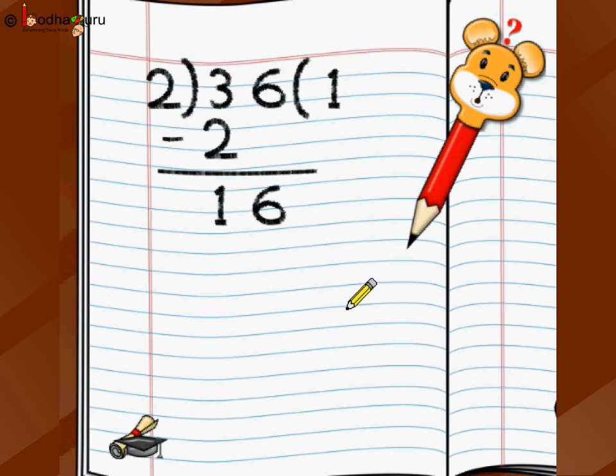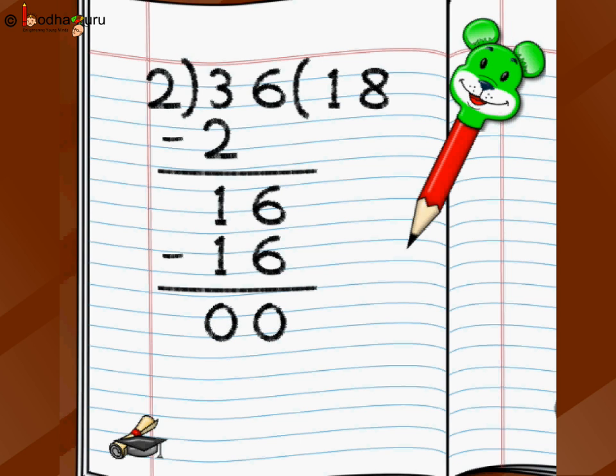Now, you write the next digit which is 6 here. So, you wrote 6 here. Now, you again do the multiplication table of 2. Where does 16 come in? 2 ones are 2, 2 twos are 4, 2 threes are 6, 2 fours are 8, 2 fives are 10, 2 sixes are 12, 2 sevens are 14, 2 eights are 16. You write there and now you subtract this value from the value which was there at the top. So, 16 minus 16 is 0, 6 minus 6 is 0, 1 minus 1 is 0. So, the answer of this problem is if you have 36 chocolates and you would like to divide between 2 people, each one will get 18 chocolates.